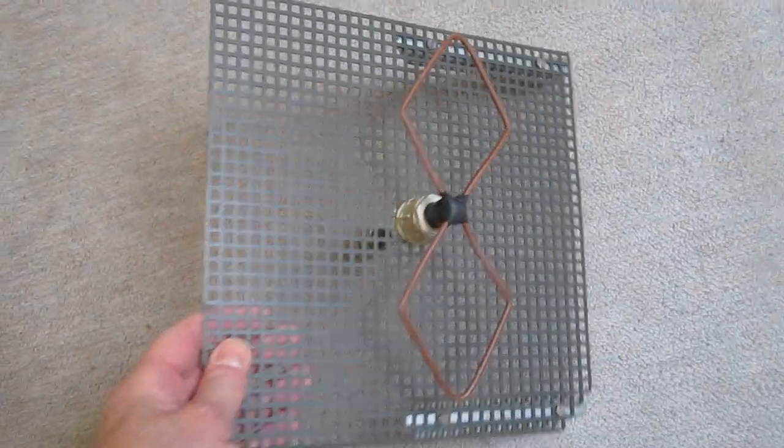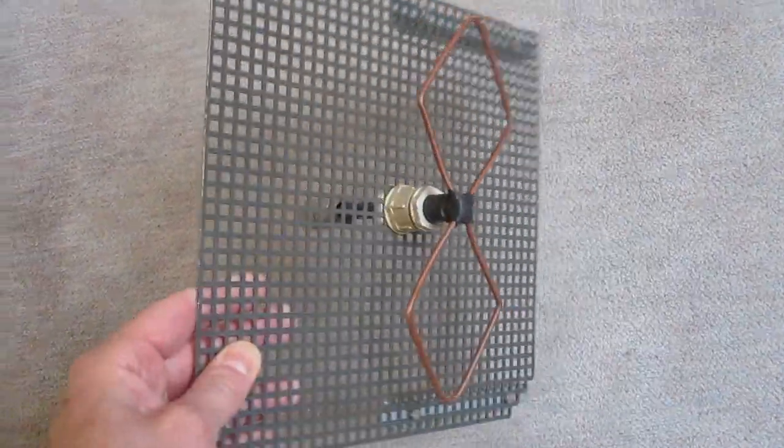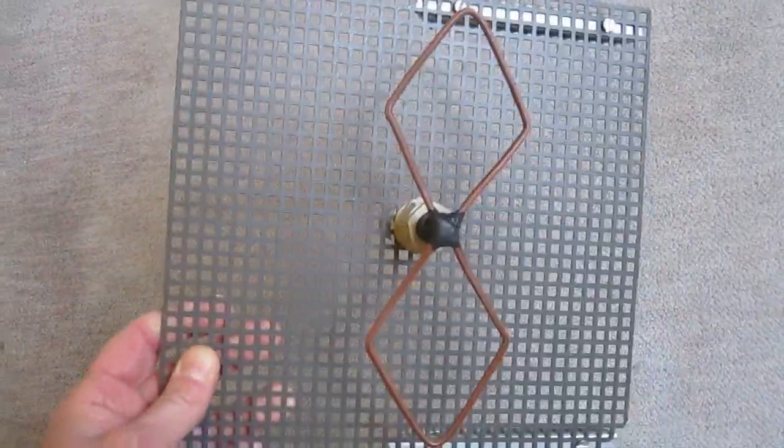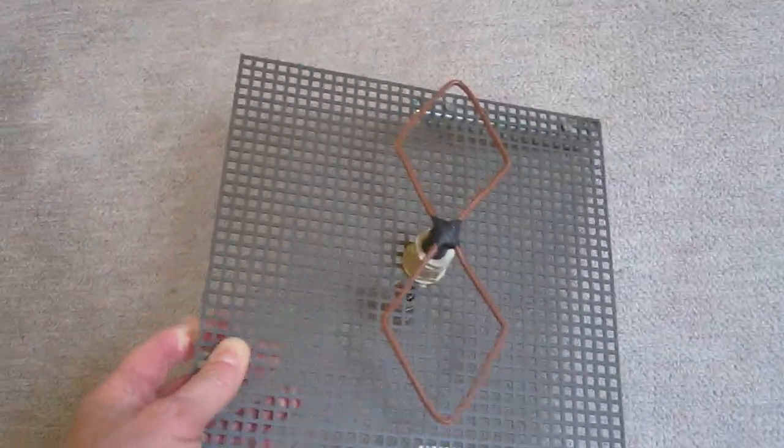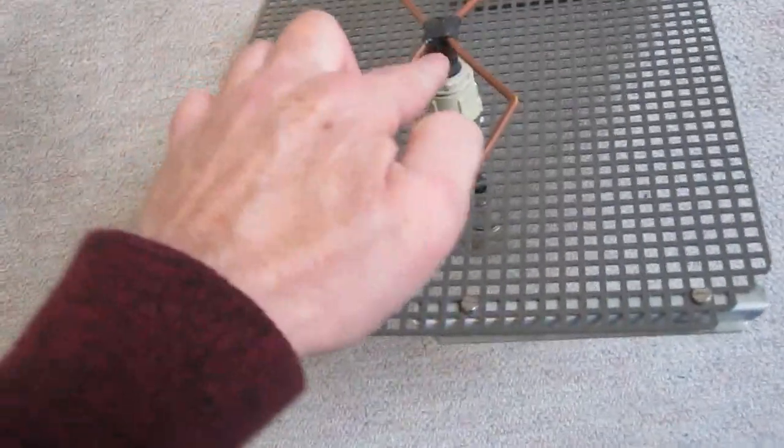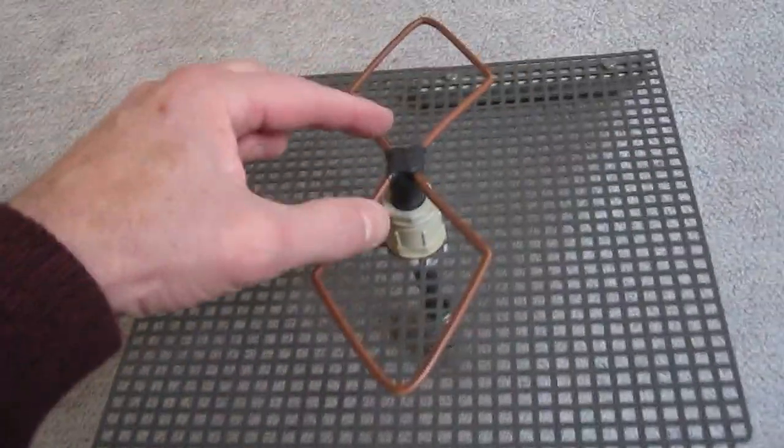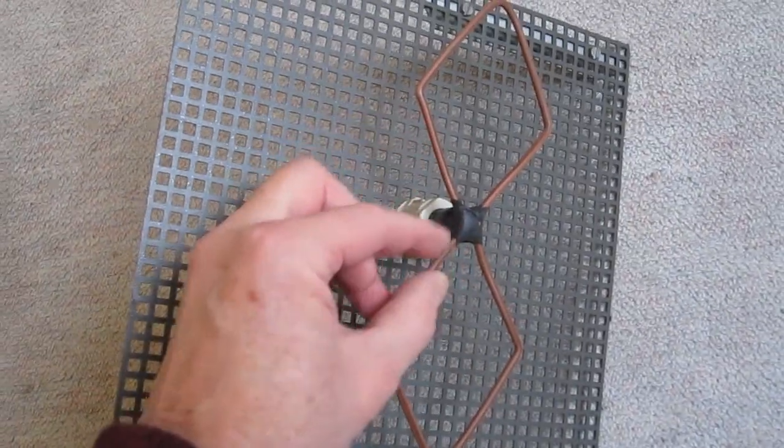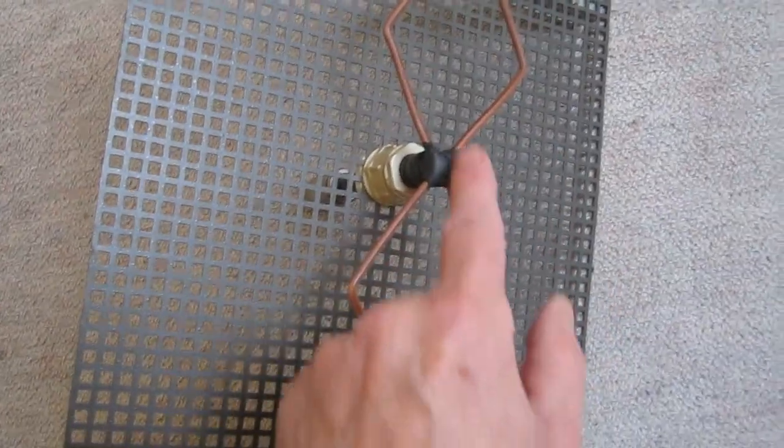Here we have a double quad for the 23-24 centimeter band. It was used for ATV, without a balun, so the coax cable is directly connected - these are connected together and these are connected together here.